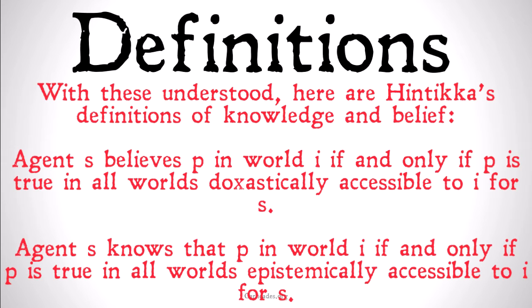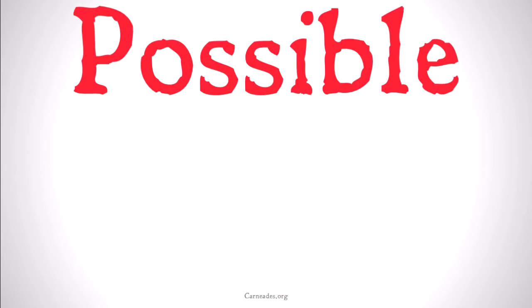At the end of the last video, we offered two definitions of knowledge and belief. Agent S believes P in world I if and only if P is true for all worlds doxastically accessible to I for S. And Agent S knows that P in world I if and only if P is true in all worlds epistemically accessible to I for S. Basically, some agent believes some proposition in some particular world if and only if, for all worlds compatible with the beliefs of S in world I, P is true. If it's not clear, watch the previous video.